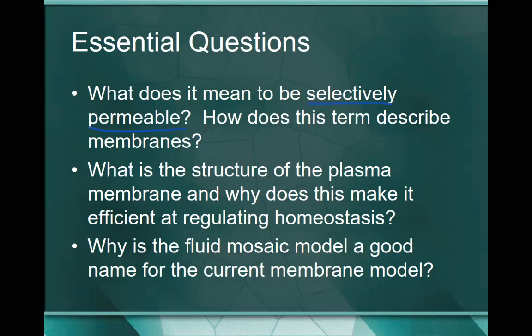Number two: what is the structure of the plasma membrane, and why does this make it efficient at regulating homeostasis? We're not going to spend a ton of time on homeostasis today, but it's going to become one of the central pieces to this whole next section talking about movement within a cell. We briefly talked about homeostasis when we were talking about characteristics of life - it means maintaining an internal balance. Number three: why is the fluid mosaic model a good name for the current membrane model? Remember, we can take electron micrographs and get pictures. All of these things are models - representations to help us better visualize how they function and what they look like inside our bodies.